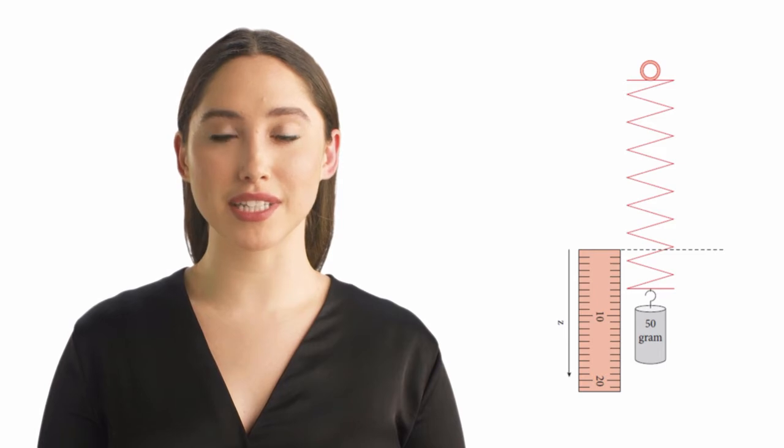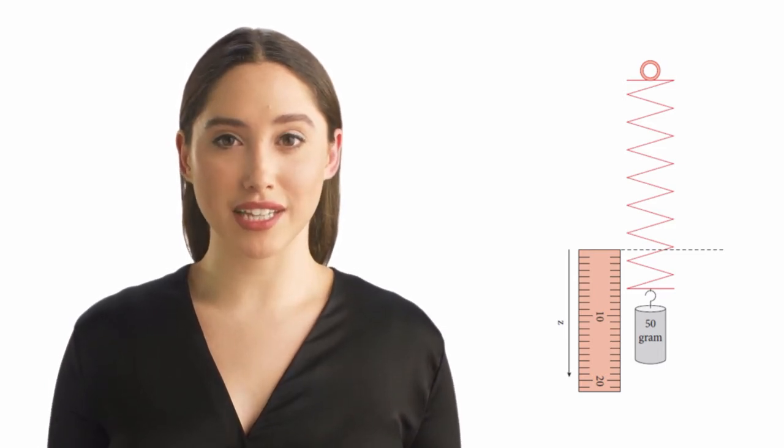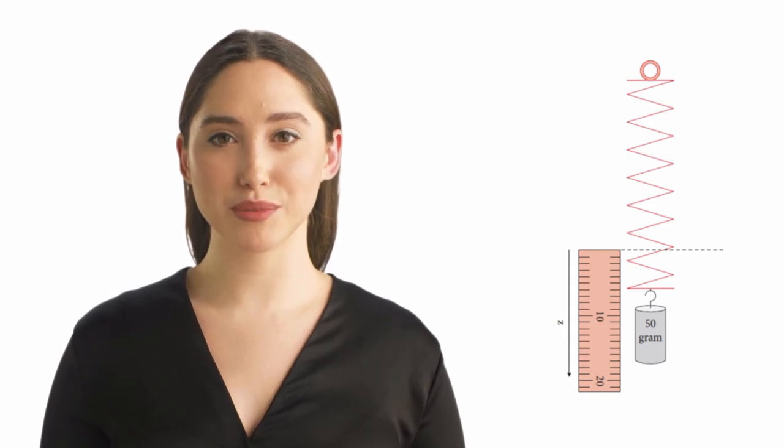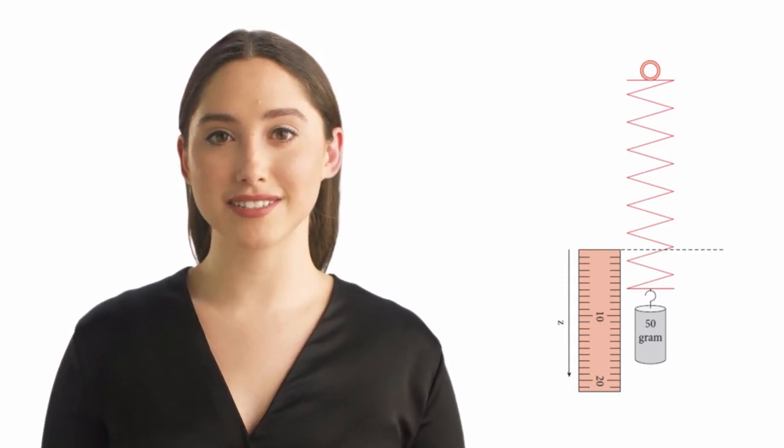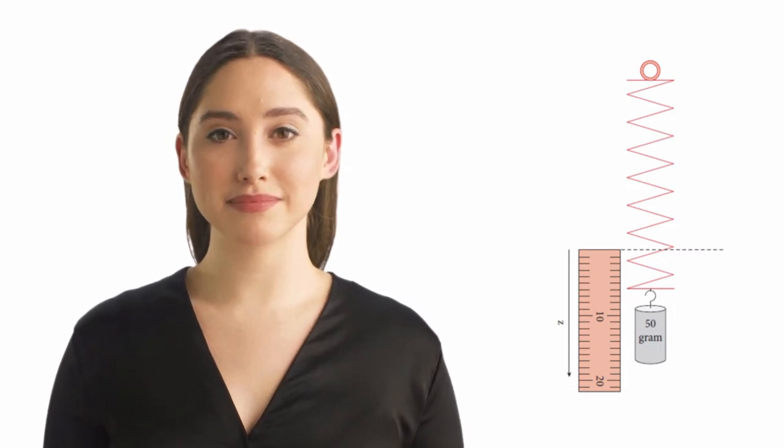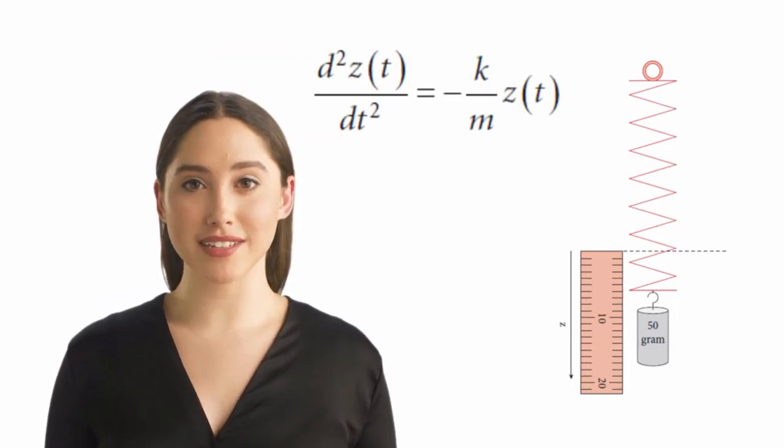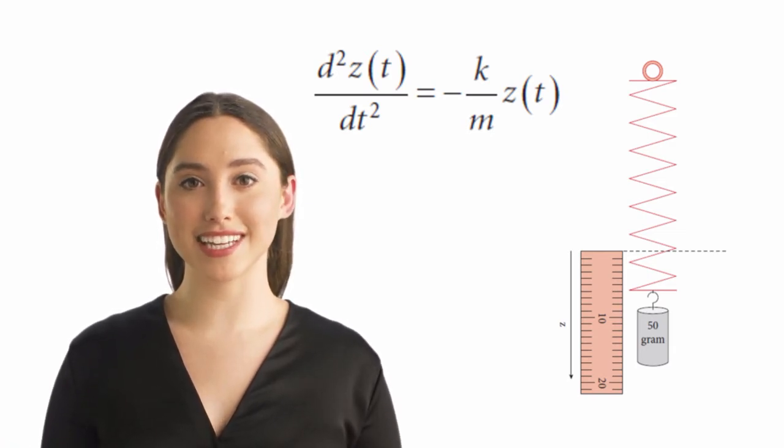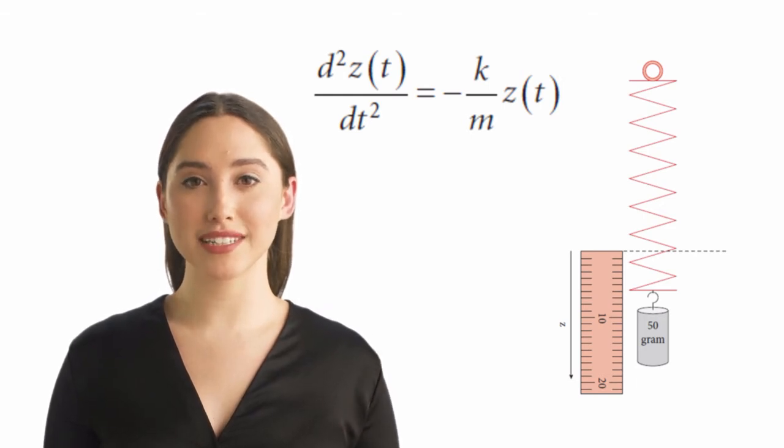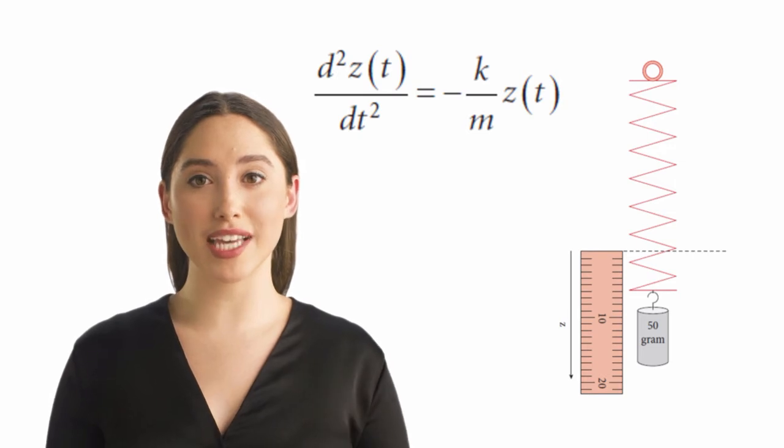The learning student can be described as a spring with the weight of life at the end. For some students, this model will be an oversimplification, but it is better with one verifiable model than just opinions. The spring represents the student's flexibility, while the weight represents inertia. With Newton's and Hooke's laws in the toolbox, one quickly arrives at the following differential equation where z is the learning amplitude, k is the spring constant and m is the mass of the weight.